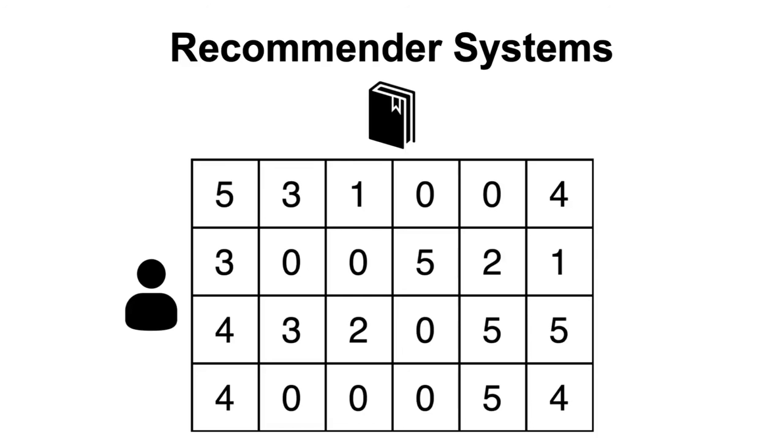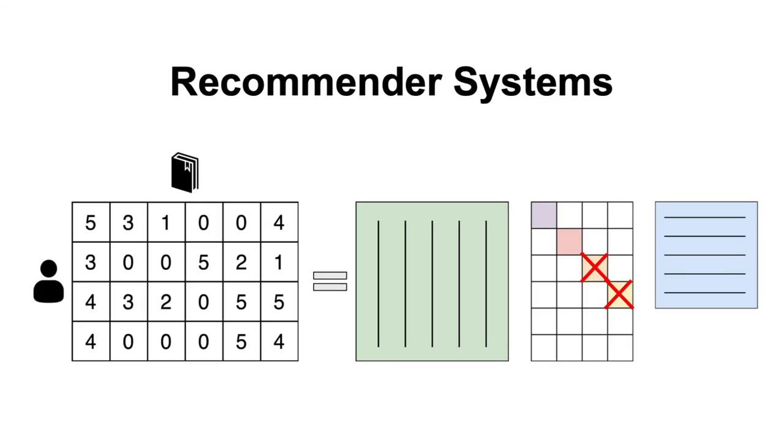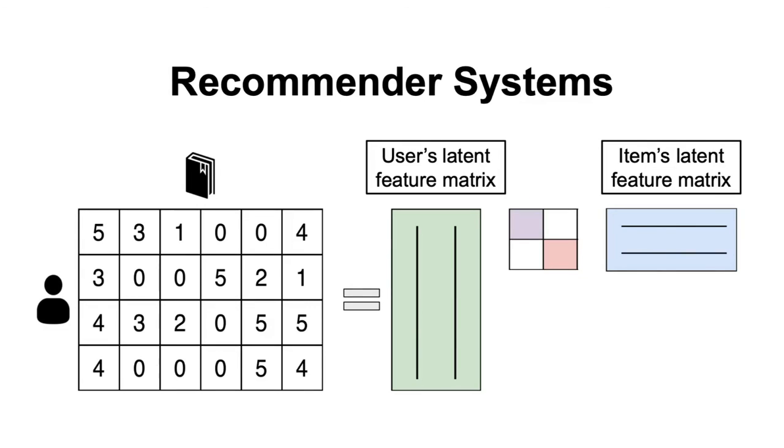By applying the singular value decomposition to this user-item interaction matrix, we can again reduce the dimensionality of the matrix while preserving the essential information about user preferences and item properties. And the resulting low-dimensional matrix can be used to identify patterns and relationships between users and items, allowing us to make personalized recommendations. I won't go into more details here about how this is done because I intend to create a more in-depth video about how recommender systems work, so I'll leave this explanation for another time.